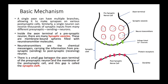Let's get an overview of the basic mechanism of synaptic transmission. A single axon can have multiple branches, allowing it to make synapses on various post-synaptic cells. Similarly, a single neuron can receive thousands of synaptic inputs from many different pre-synaptic sending neurons.